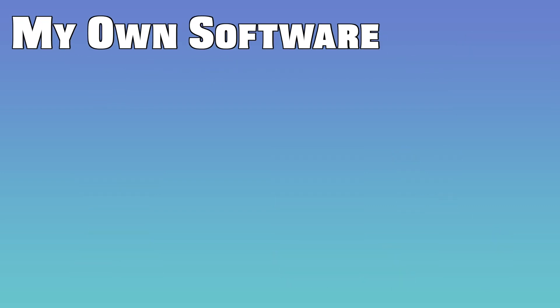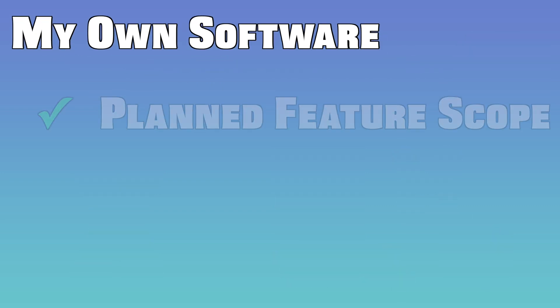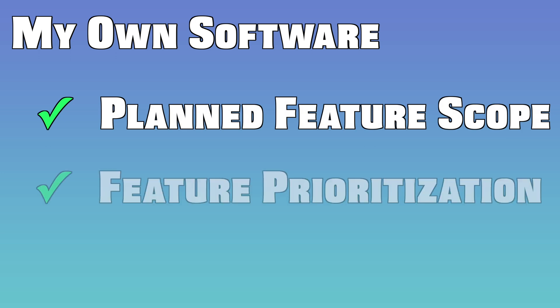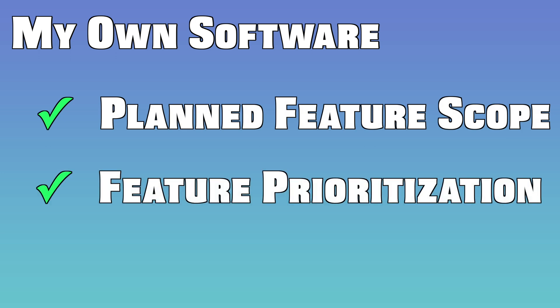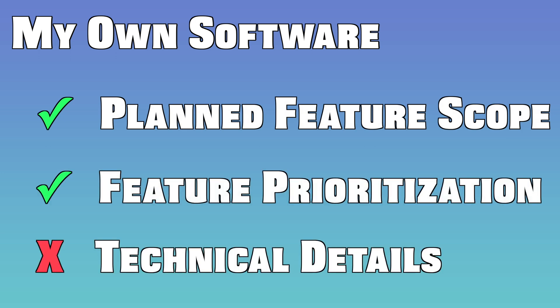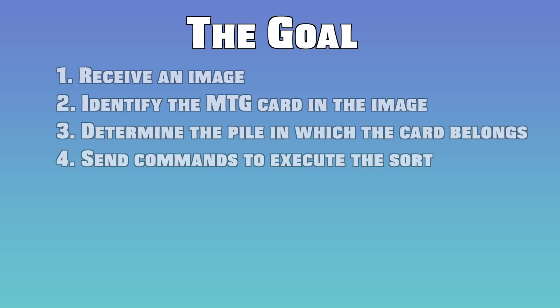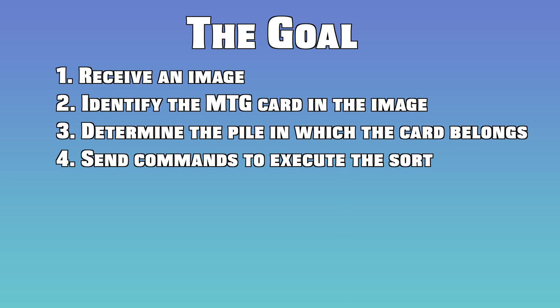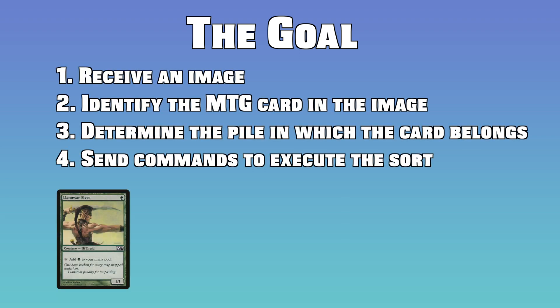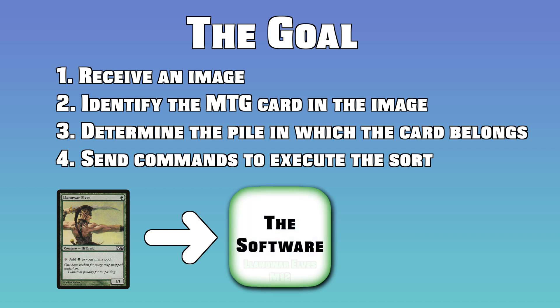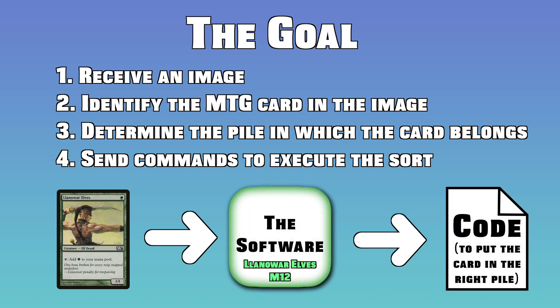In this video, I'll be going over my software's planned feature scope, as well as how I am prioritizing those features. I won't be going over any technical details, as that really should be a whole video on its own. First things first, it's important to define the overall goal of the software. It will need to receive a digital image, correctly identify the magic card within that image, and send commands to the machine such that that card is deposited into the correct pile.